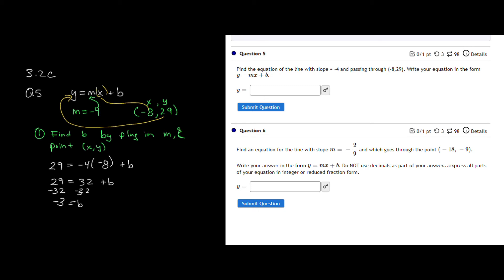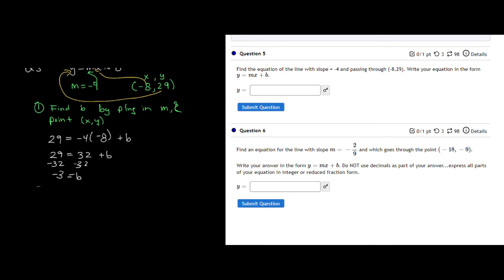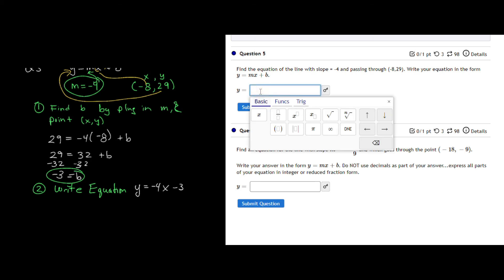So our final place, that's our first step. Our second step is to now write the equation. Now that I know what b is, and we are given our m was equal to negative 4. So my equation is just y is equal to negative 4x minus 3. And again, this has y is equal to, so all you're putting inside here is the negative 4x minus 3.